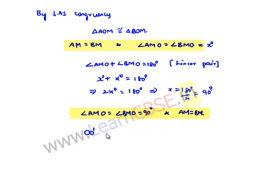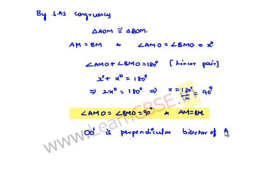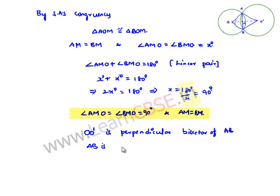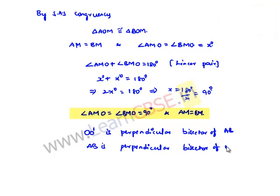Therefore, OO' is the perpendicular bisector of AB, and the relation is mutual. So we can also say that AB is the perpendicular bisector of OO'. This is the required proof.